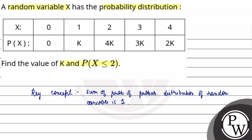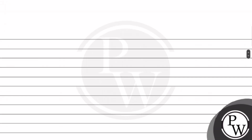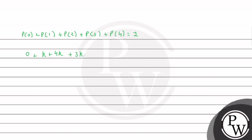Basically, what we need to do is use the fact that the total probability is 1. So, we can write: probability when x is 0, plus probability when x is 1, plus probability when x is 2, plus probability when x is 3, plus probability when x is 4, is equal to 1. So, this will be 0 + k + 4k + 3k + 2k = 1.